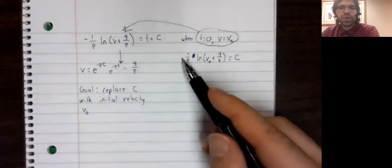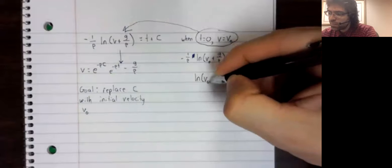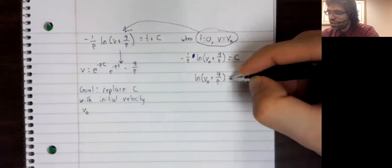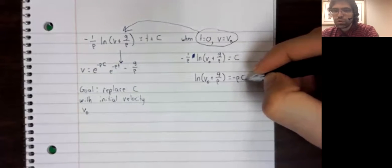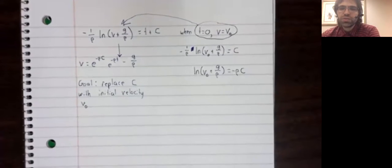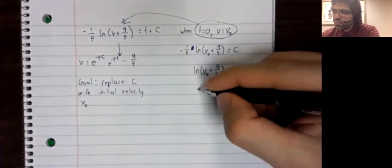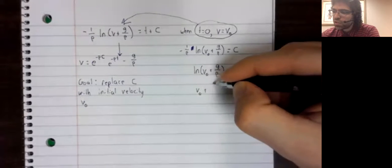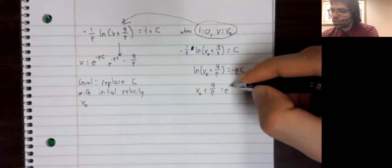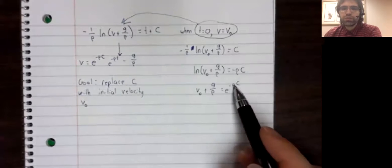Multiply both sides by negative rho. This natural logarithm involving this velocity is negative rho c. Exponentiate both sides. On the left, the exponential and the logarithm will cancel out. And this gives us e to the negative rho c.